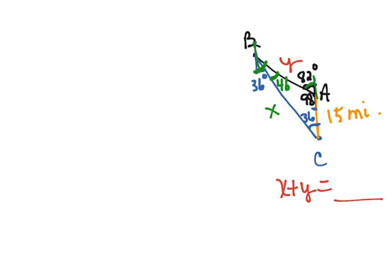And so now we have an angle and the side across from it, and we want to find sides that are across from known angles. So we can use law of sines to work the problem.